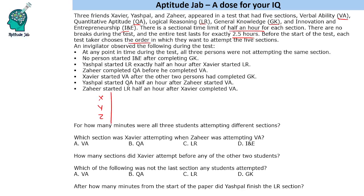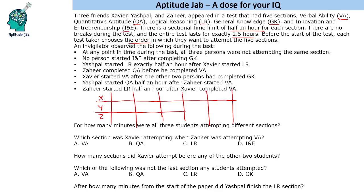We have five sections, so let us set up five slots in the order in which they were attempting the sections — these are the five sections that they will attempt in the paper.